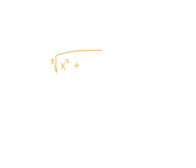A couple of other types you might see on the website. If we have something like the cubed root of x squared plus 2 equals x, to get rid of the cubed root we cube both sides. The cubed and cubed root cancel, leaving us with x squared plus 2 equals x cubed. Then from there we would solve.